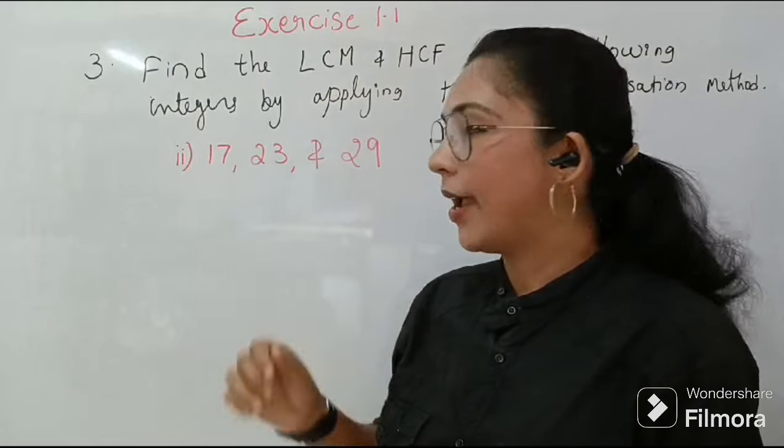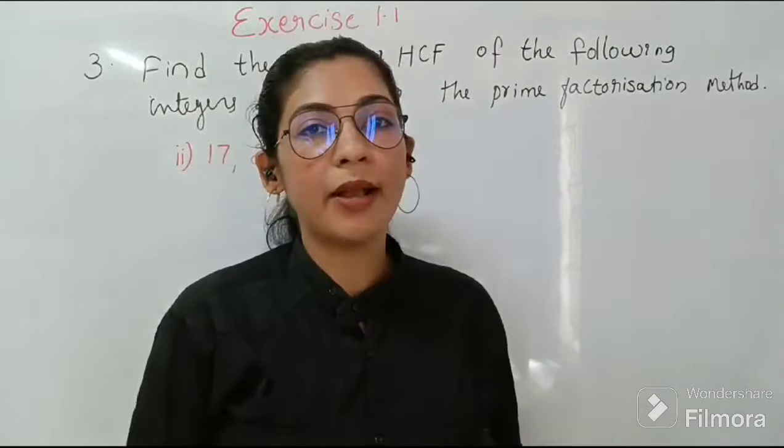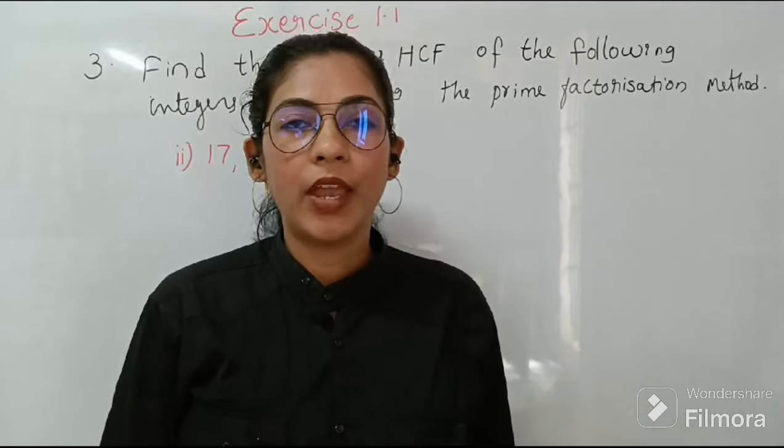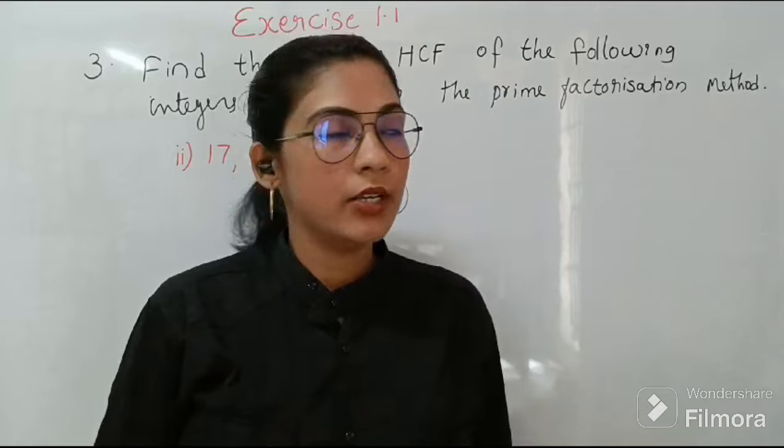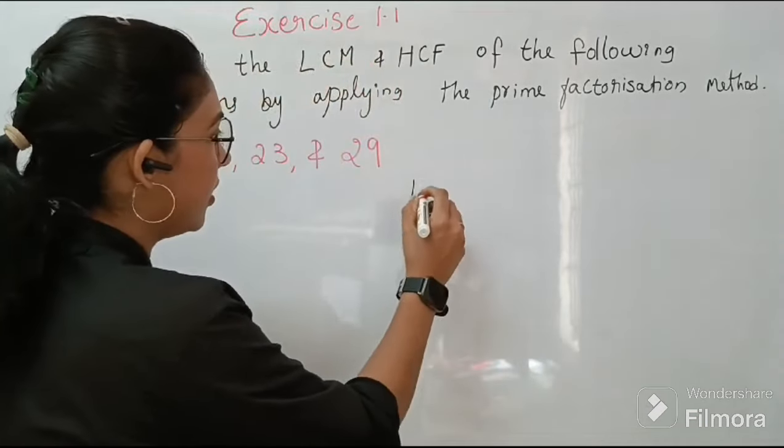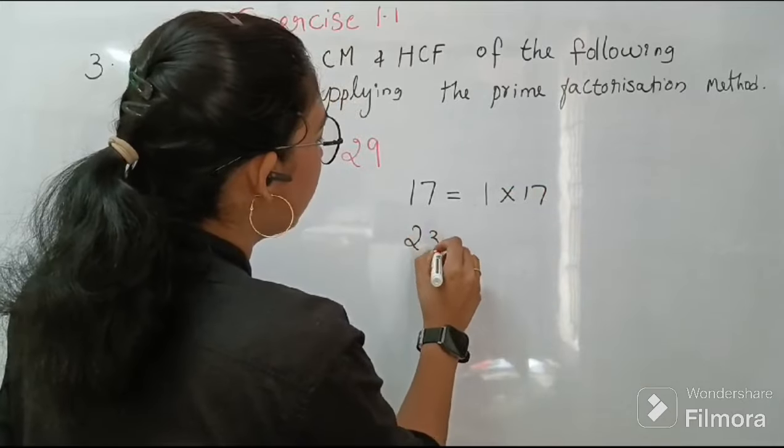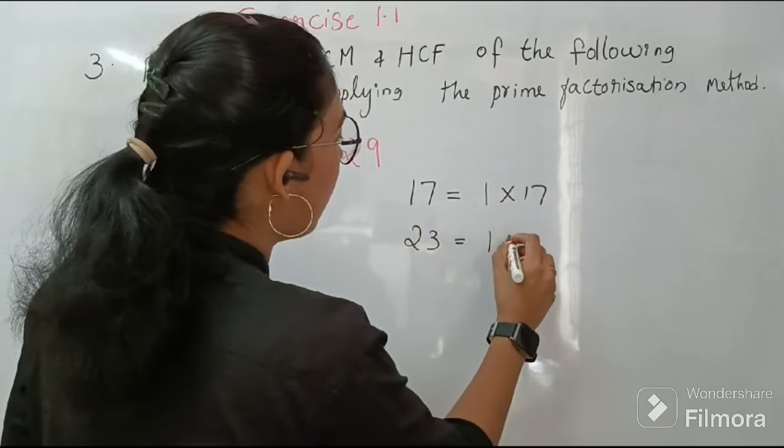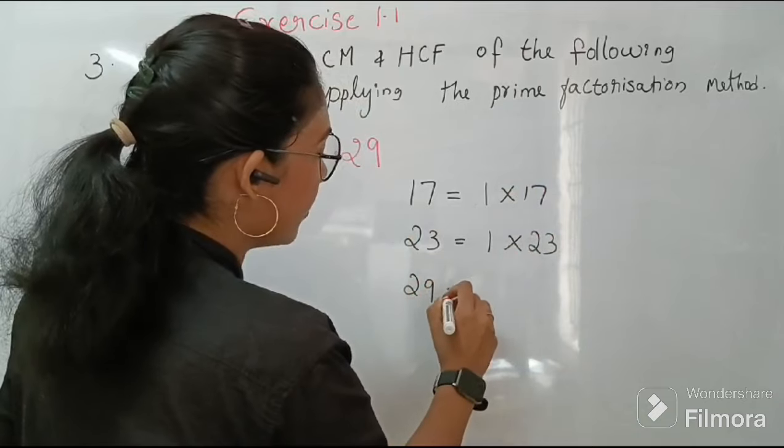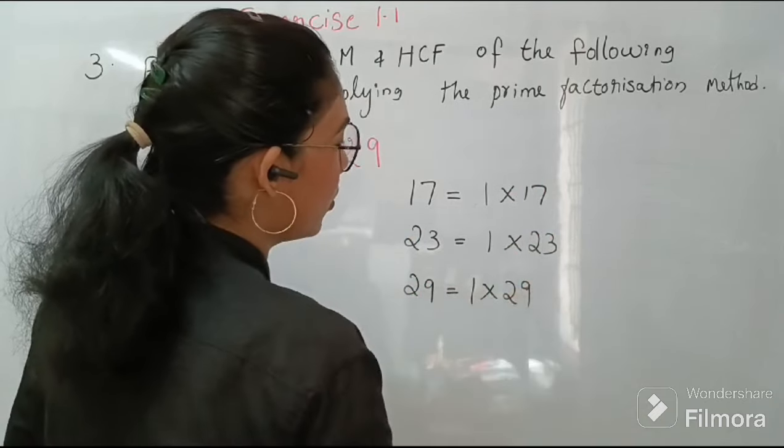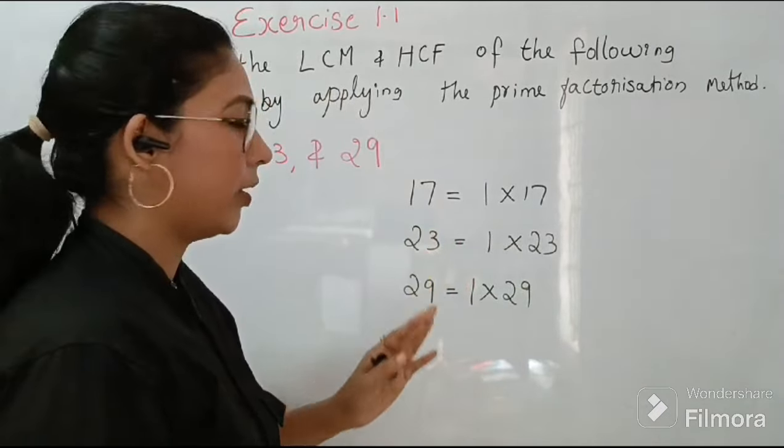Next one is 17, 23 and 29. See all these 3 numbers are prime numbers and we know that factors of prime numbers are 1 and the number itself. So we can write 17 is equal to 1 into 17. Then 23 is equal to 1 into 23. And 29 is equal to 1 into 29. So these are the factors of 17, 23 and 29.